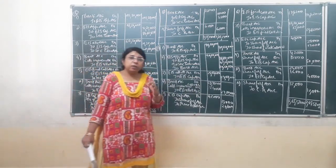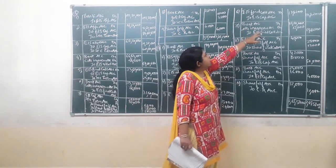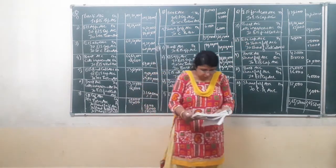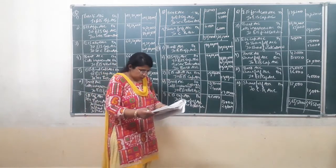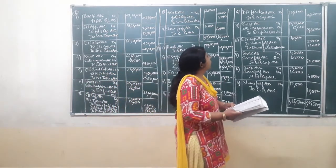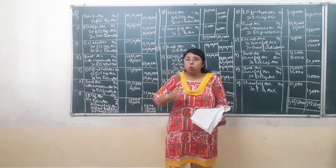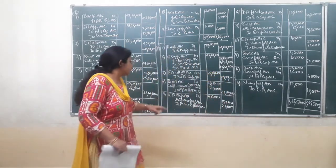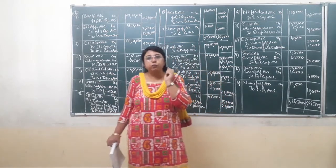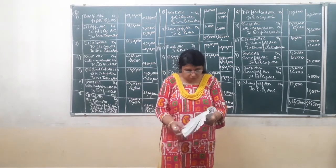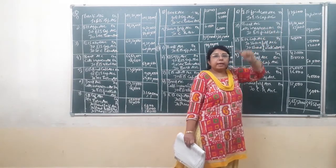Now moving to the final call step. First the amount of final call will be due: equity share final call account is debited by Rs. 17,82,000. How did Rs. 17,82,000 come? Total shares are 6,00,000, but we have already forfeited 6,000 shares of Siddharaj. So from 6,00,000 minus 6,000 shares, remaining shares are 5,94,000. On 5,94,000 shares, final call money is Rs. 3 per share. So 5,94,000 multiplied by Rs. 3 comes to Rs. 17,82,000.